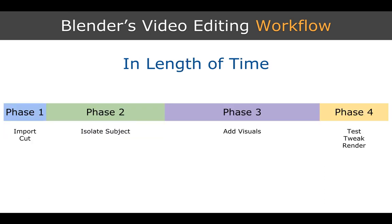And if you want to see it comparatively, with the length of time each phase might take — here is the graph for that. Phase one takes the least amount of time because it's fairly straightforward. Phase two is quite a bit longer because it involves color grading and chroma keying, which is sometimes trial and error and a lot of tweaking. Phase three is going to take you the longest — this is the core of editing, so you're adding everything including transitions, graphics, and all of that. Phase four is just a little bit longer than phase one and still fairly straightforward, however there's more tweaking involved and rendering can take up a bit more time.